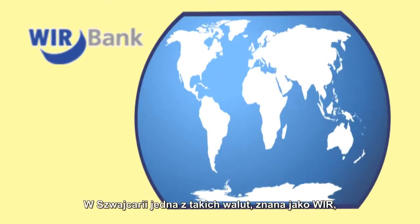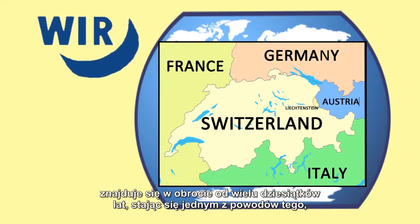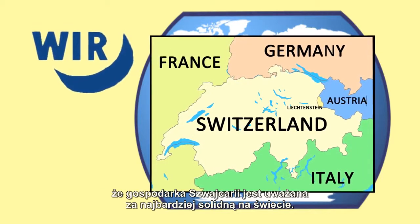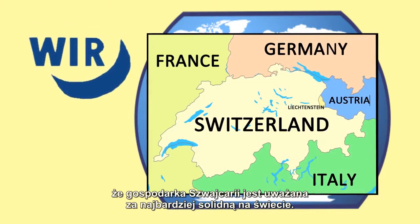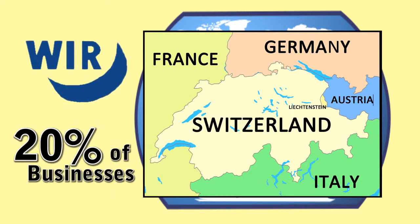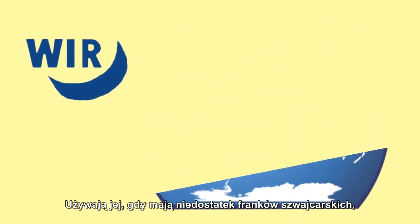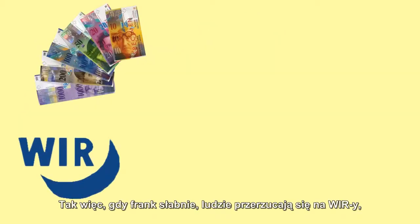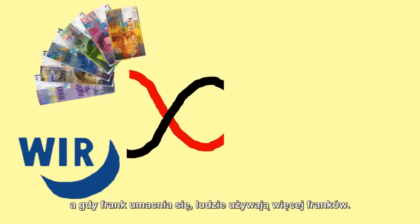One such currency in Switzerland, called the VIR, has been in circulation for many decades and has shown to be one reason the Swiss economy is considered the most robust in the world. Around 20% of businesses in Switzerland use the currency in a network. They use it where they don't have enough Swiss francs, especially when the Swiss franc weakens during global downturns. So as the Swiss franc weakens, people use more VIR, and as the Swiss franc strengthens, people use more Swiss francs.